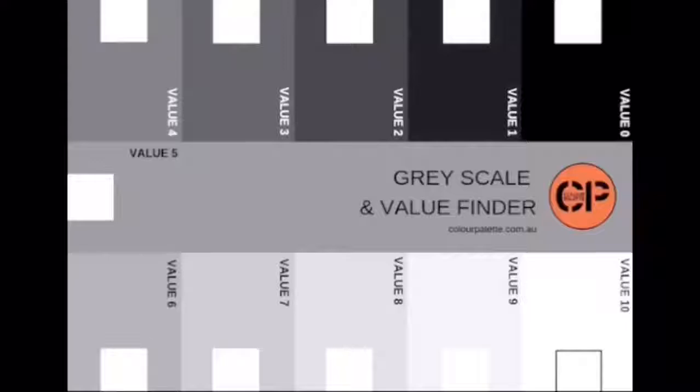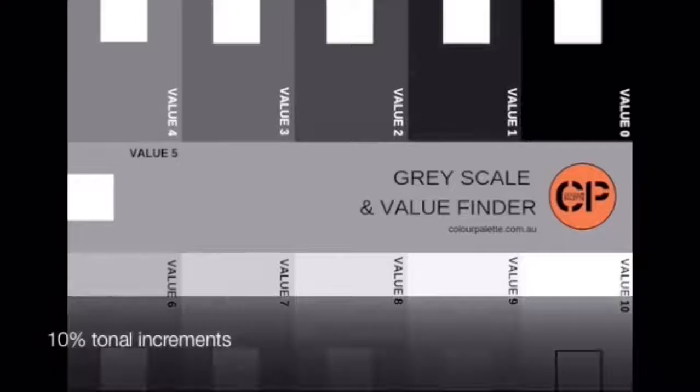Color Palette Grayscale and Value Finder tool has 11 different tonal values that range from 0, which is your black, to 10, the white, and you have all the different grays in between. What we really love about this tool is that you have 10% increments between each value, which means from 0 to 1 you have a 10% increment, from 1 to 2 another extra 10%, etc.